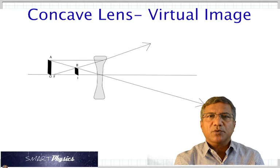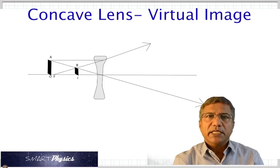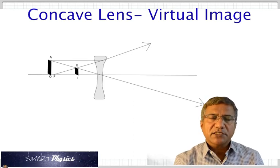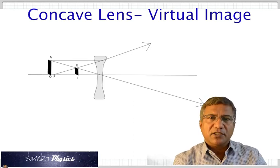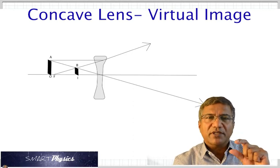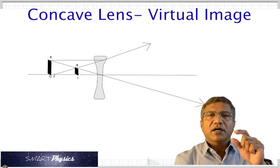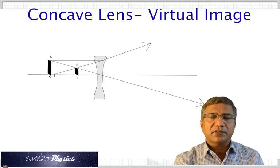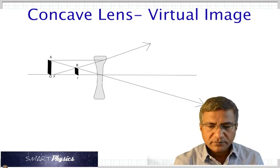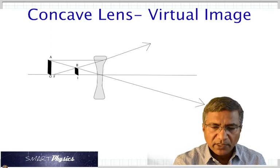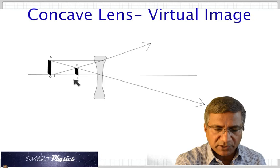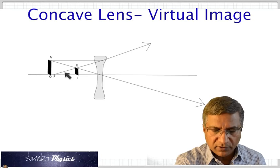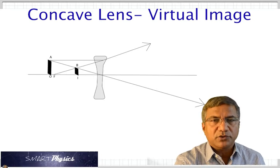We can see the image is virtual, it's upright, and it's smaller than the object — meaning the magnification is less than one. The image is, of course, very close to the lens.